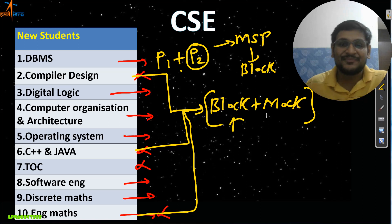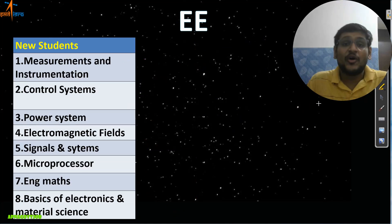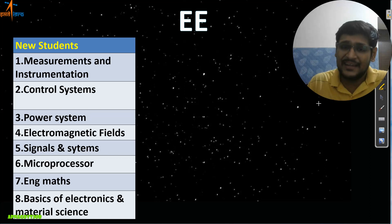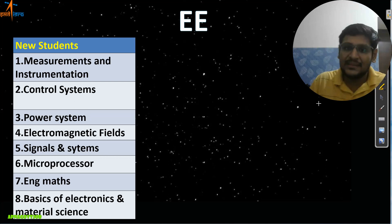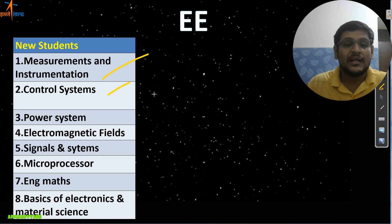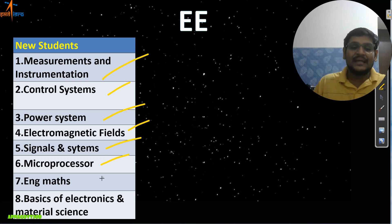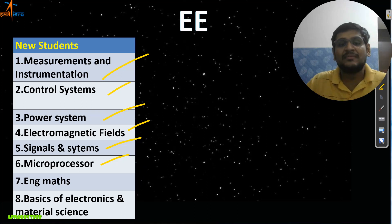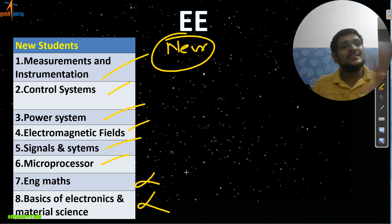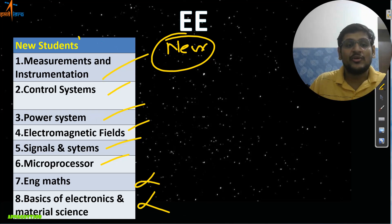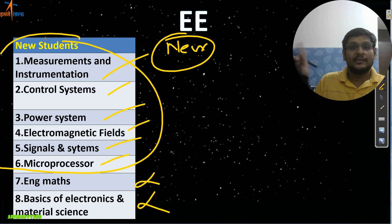Next is the Electrical branch. For electrical students, you have about two and a half months for preparation and your exam is expected this month. In the upcoming 15 to 16 days, we need to complete the remaining subjects: Measurement and Instrumentation, Control Systems, Power Systems, Electromagnetic Fields, Signals, Microprocessor, Basics of Electronics, Material Science, and Engineering Mathematics.